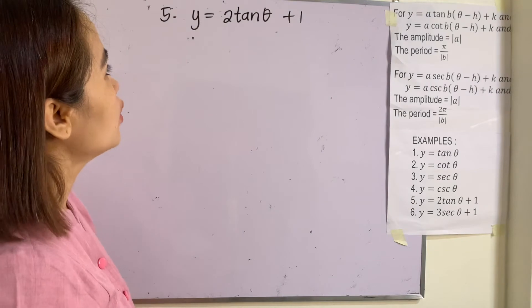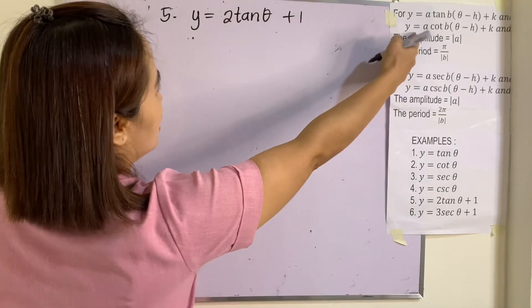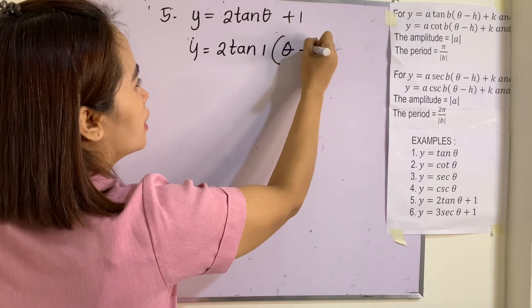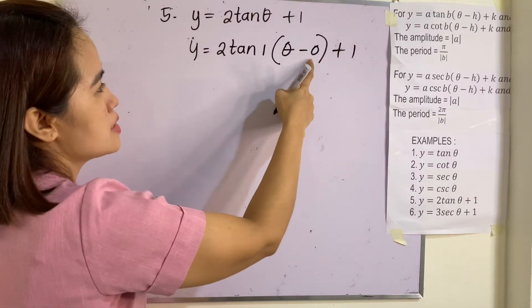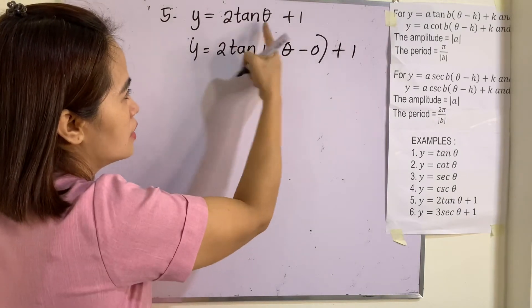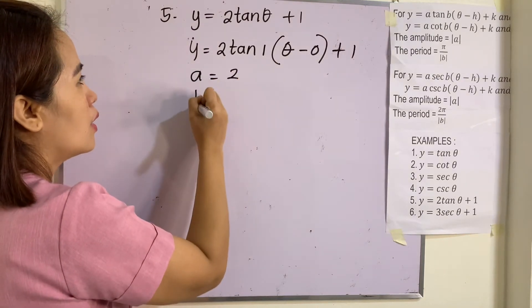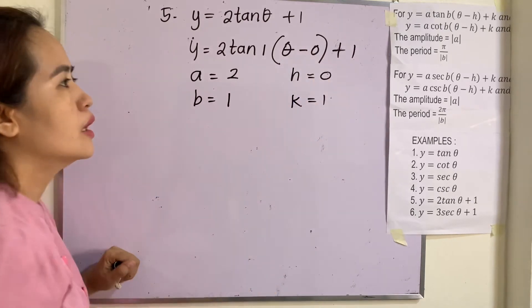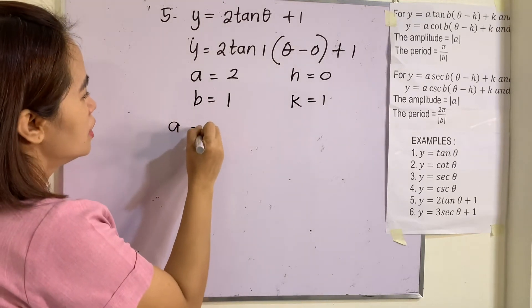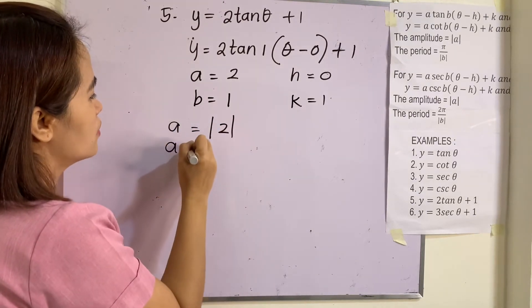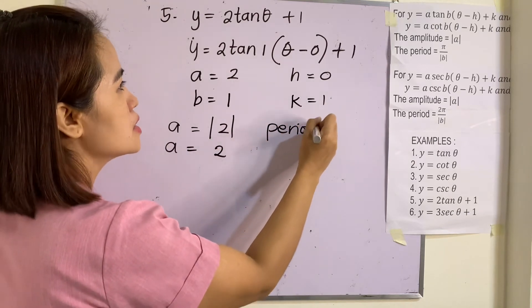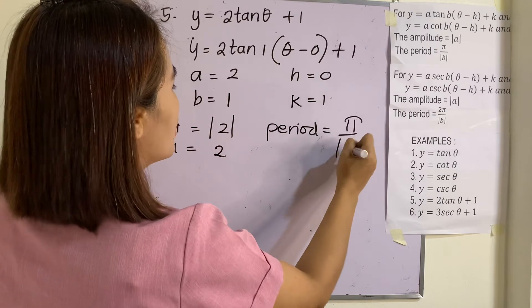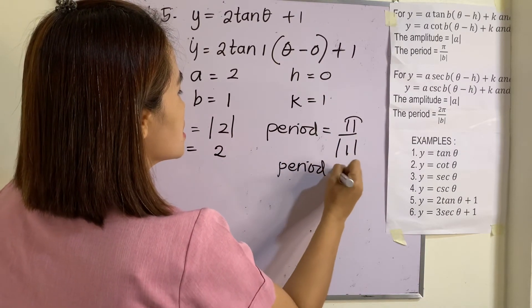Example 5: y = 2·tan(θ) + 1. Written in standard form: y = 2·tan(1·(θ − 0)) + 1. So a = 2, b = 1, h = 0, k = 1. The amplitude is |a| = |2| = 2. The period is π/|b| = π/|1| = π.